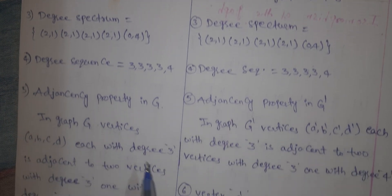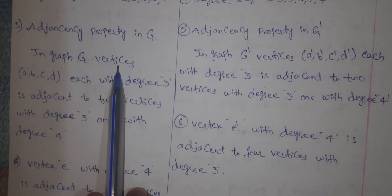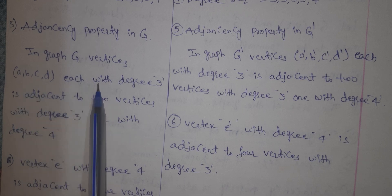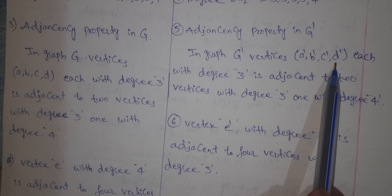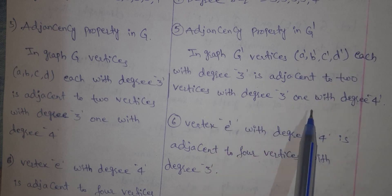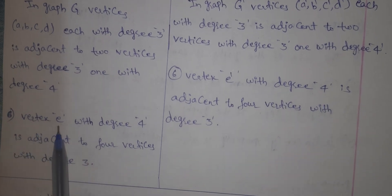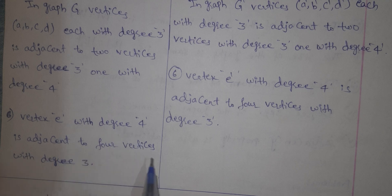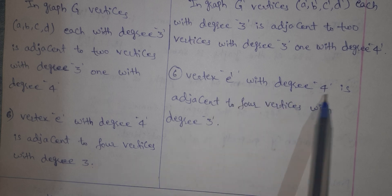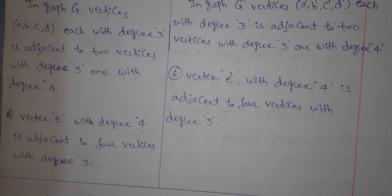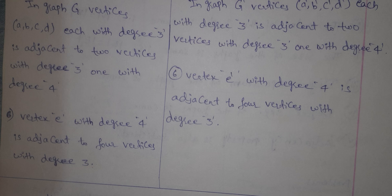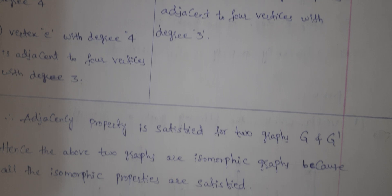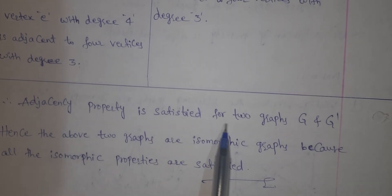Next, let us verify the adjacent property. In graph G, vertices A, B, C, D each have degree 3, giving us 4 such vertices. Similarly, in graph G dash, vertices A, B, C, D, E also have vertices with degree 3 — giving 4 as well. Vertex E with degree 4 is adjacent to 4 vertices with degree 3. Vertex E dash with degree 4 is also adjacent to 4 vertices with degree 3. The adjacent property is satisfied for both graphs G and G dash.